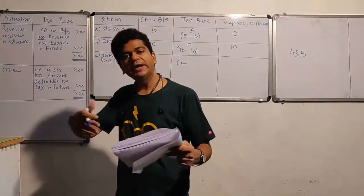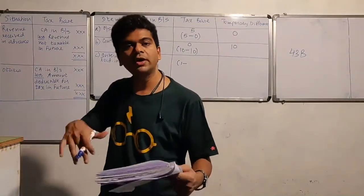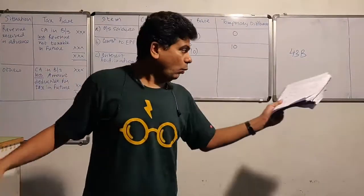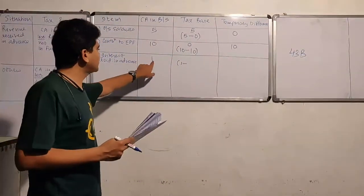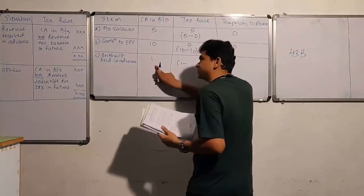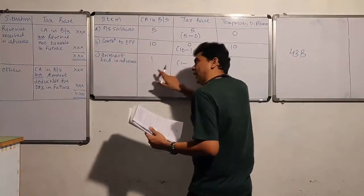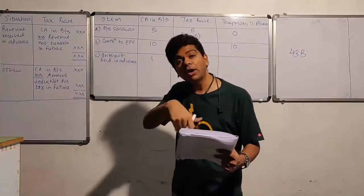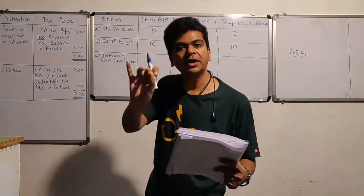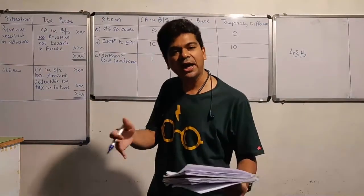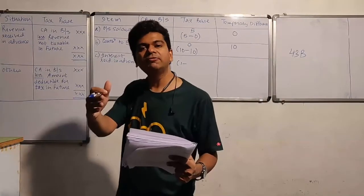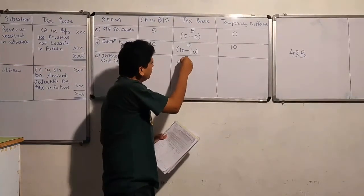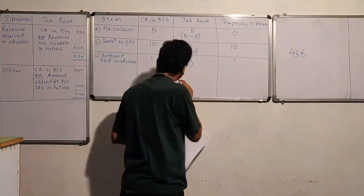Since the entire one lakh of interest received in advance has already been taxed in the current year, no amount of revenue is taxable in future. Therefore, revenue not taxable in future equals the entire one lakh. The tax base is one lakh minus one lakh, which equals zero, and the temporary difference is one lakh.